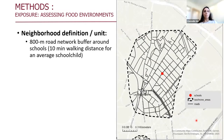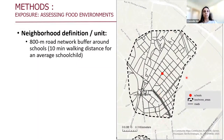This is a sample map where we can see the school in red and the 800-meter buffer around the school. As you can see, it's not a full circle — it's a polygon because we're talking about road network distance and not a straight-line distance.